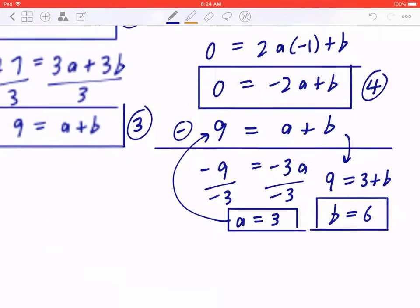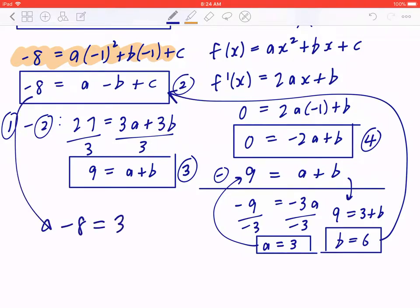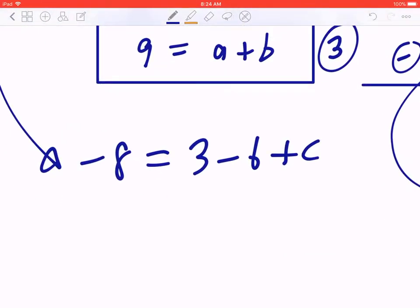Last but not least, if you want to find c, you can plug it back in to, let's say this one. This will give you negative 8, which equals 3 minus 6 plus c. Again, negative 8 equals negative 3 plus c. C equals negative 5.